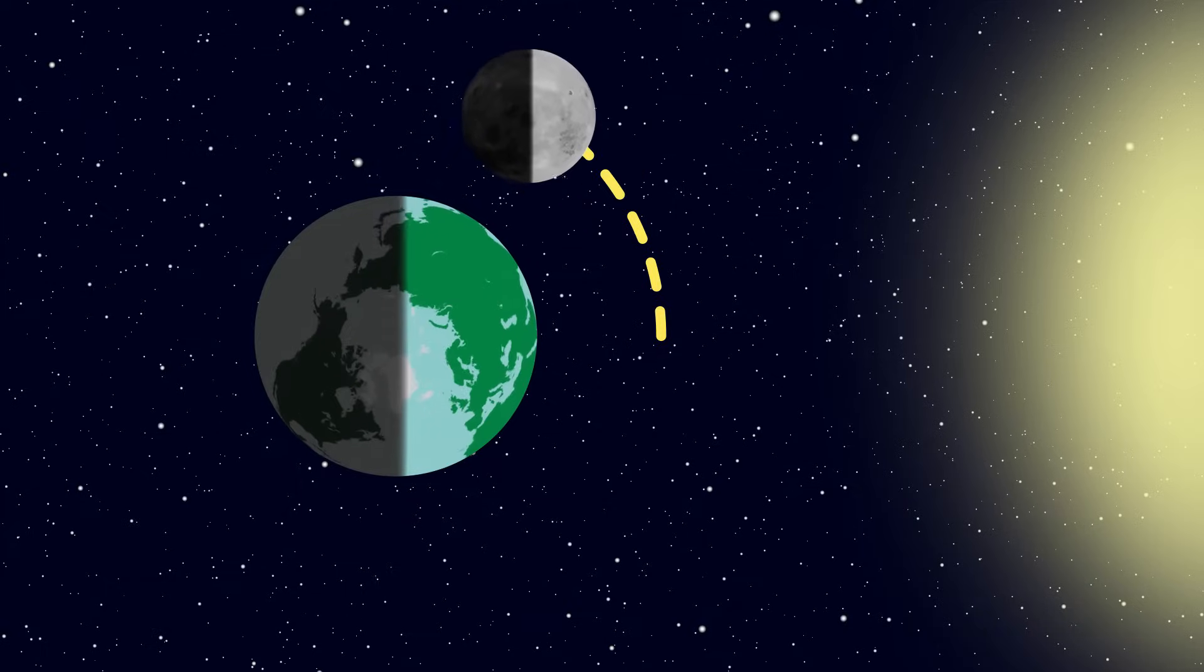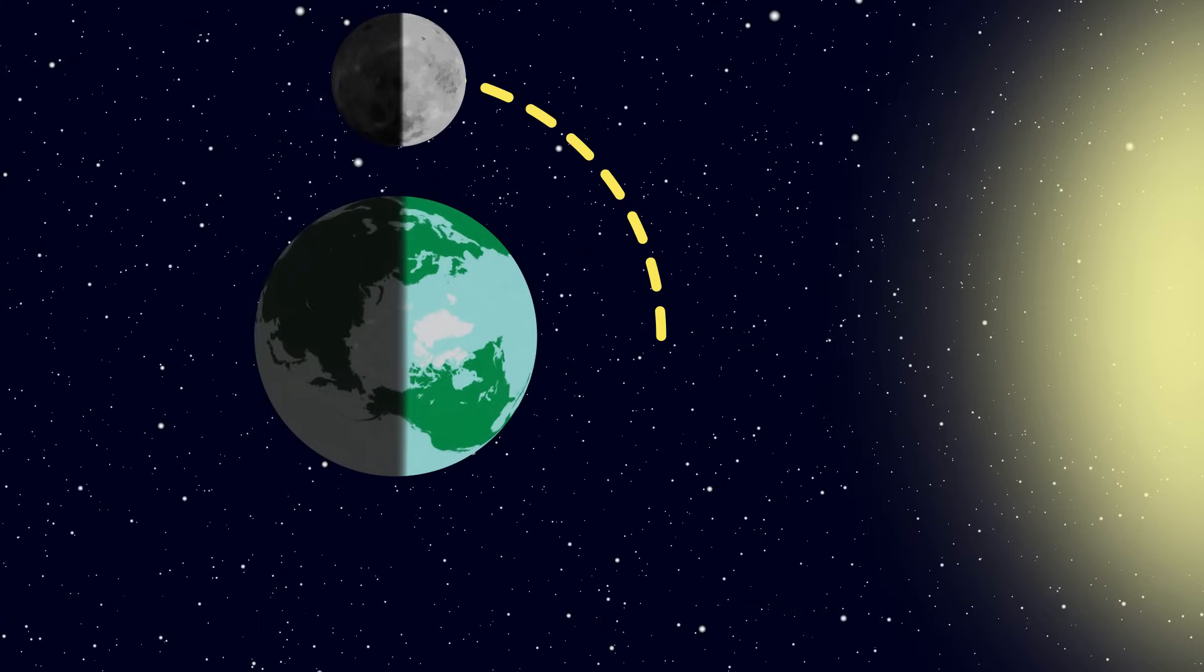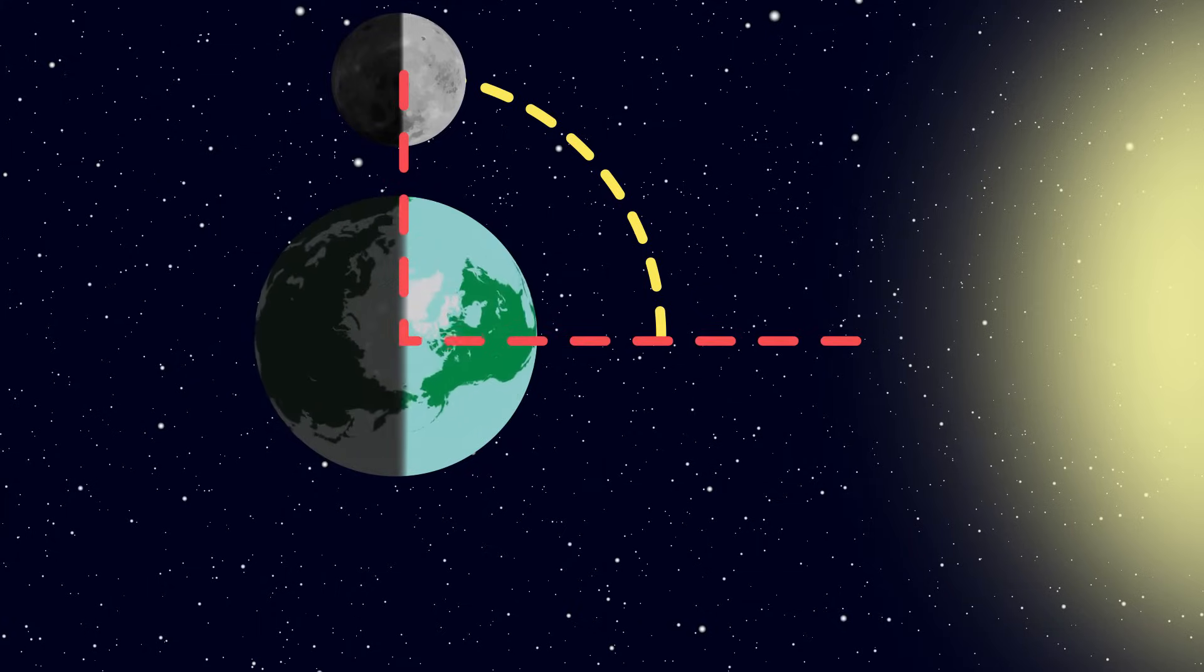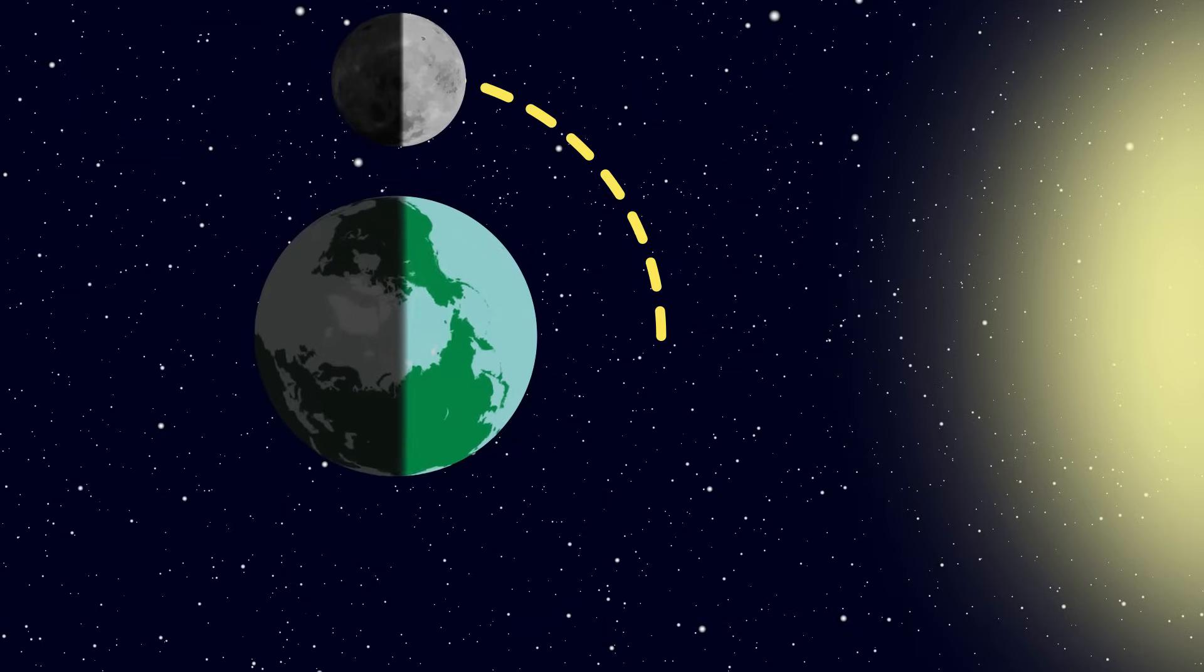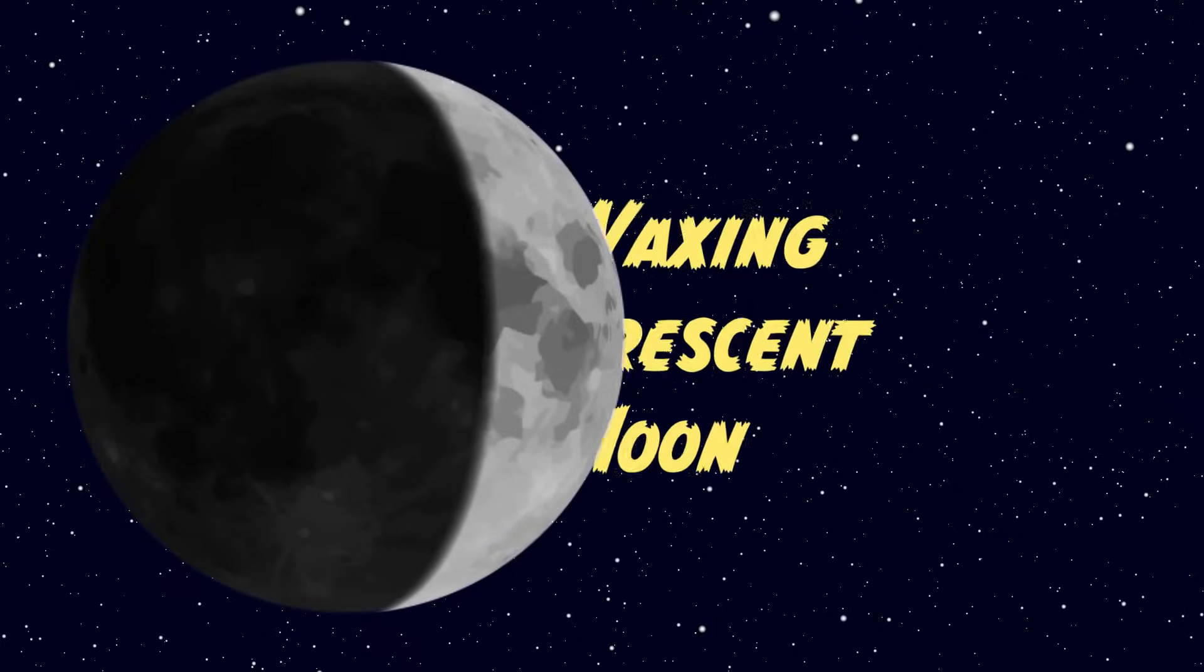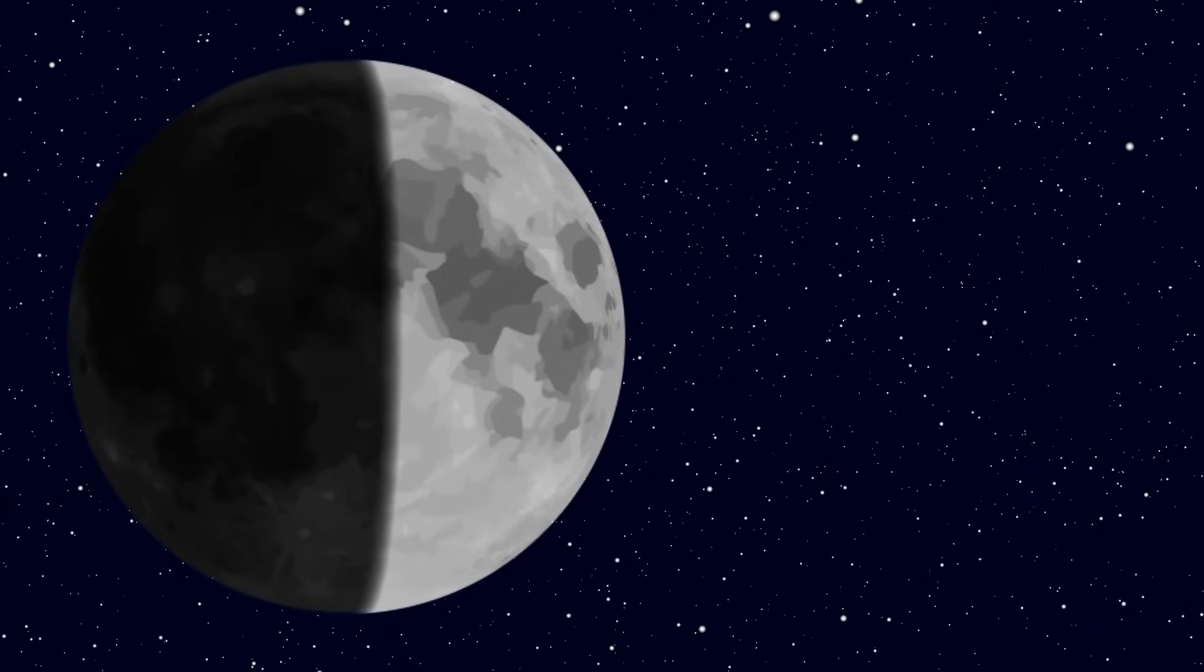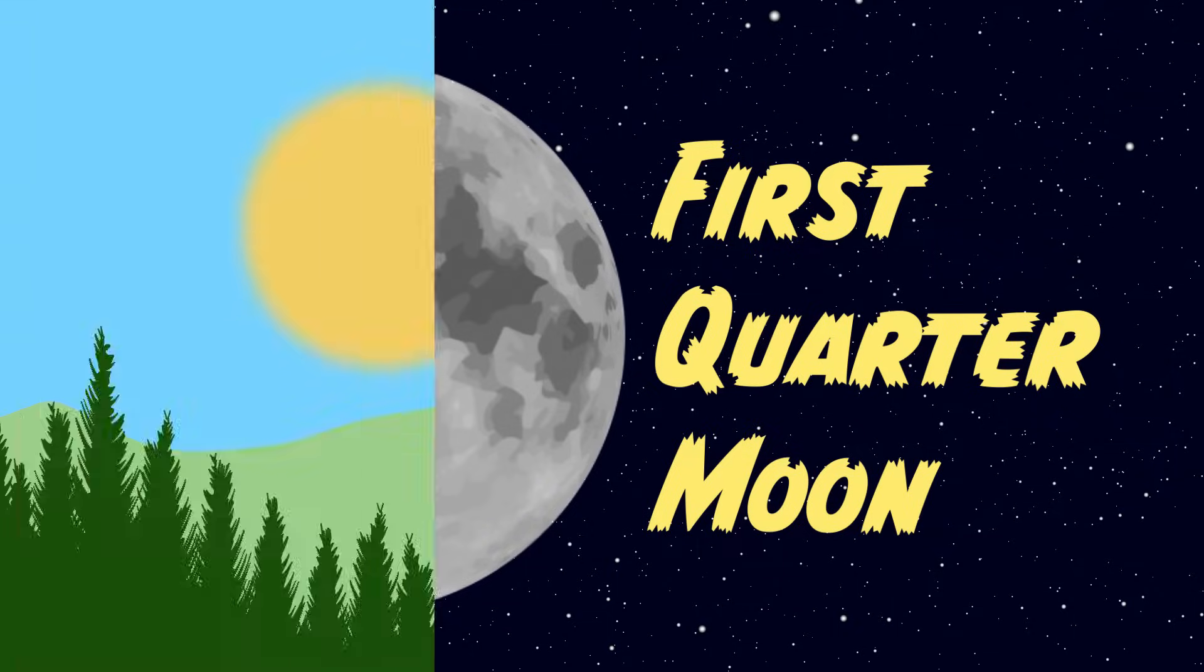About seven days after the new moon, or 25% of the moon's orbit around the Earth, the moon is now at 90 degrees off to one side. At this point, we're looking directly at the line that separates the light half from the dark half. Now because the moon is a quarter of the way through the cycle, we call it the first quarter moon, even though clearly we can see half of the moon. I don't know, we gotta do better with these names, guys.